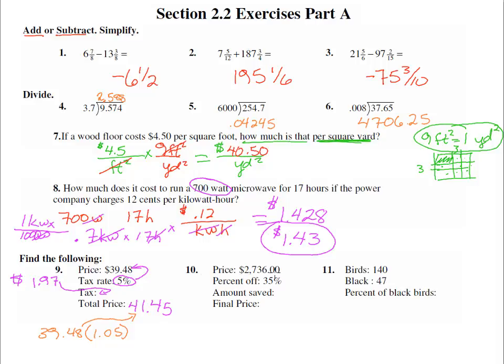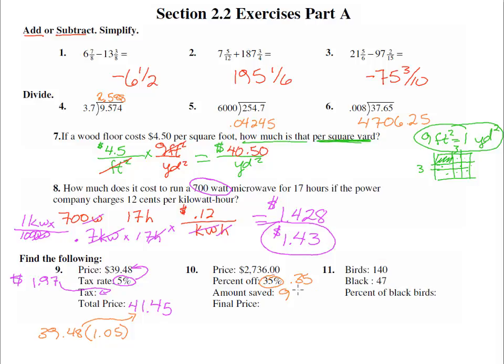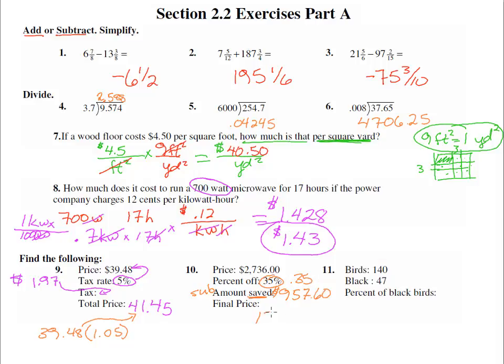Number 10: Here's the price. We're saving 35%, which is 0.35 as a decimal. We're going to times that. So let's use our calculator: 2736 times 0.35 equals $957.60. So that's how much we get to save. That's 35% of the original. Now notice this is saving, so it's not added. It's subtraction. So 2736 minus 957.6 equals 1778.40. That would be the final price.